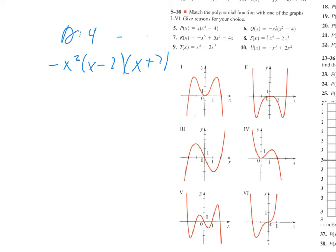I know my end behavior is down to the left and down to the right. I have a zero at zero, which would be a bounce since it has multiplicity two; at two, which is a cut; and at negative two, which is also a cut. So I think the only one that could be is Roman numeral one, because it has the bounce at zero and cuts at negative two and two.